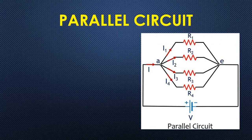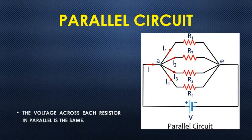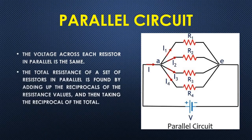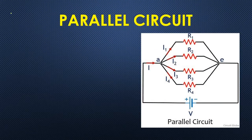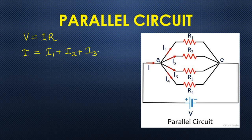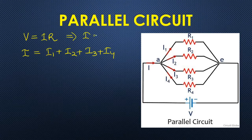In a parallel circuit, the voltage across each resistor is the same. To find the equivalent resistance, the total resistance of resistors in parallel is found by adding the reciprocals of the resistance values and then taking the reciprocal of the total. Using Ohm's law, V equals I into R, the one current branches out into four currents: I1 plus I2 plus I3 plus I4 at point A. From Ohm's law, I equals V divided by R.